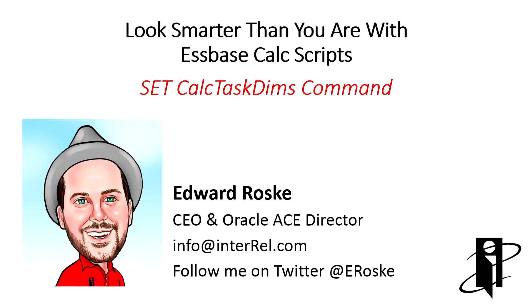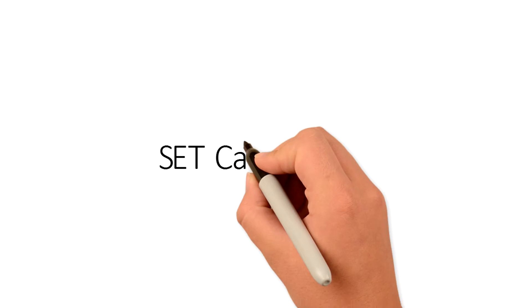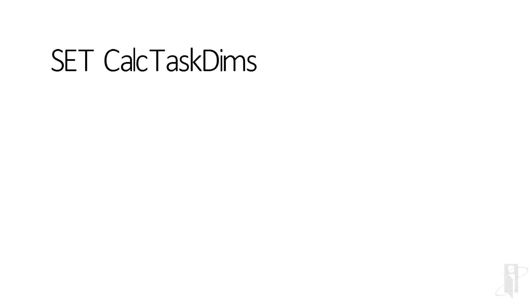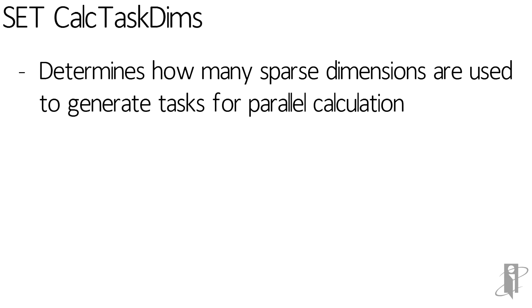The SetCalcTaskDims command inside of an S-Base block storage calc script is designed to determine how many sparse dimensions you're going to use to launch simultaneous parallel calculation tasks.